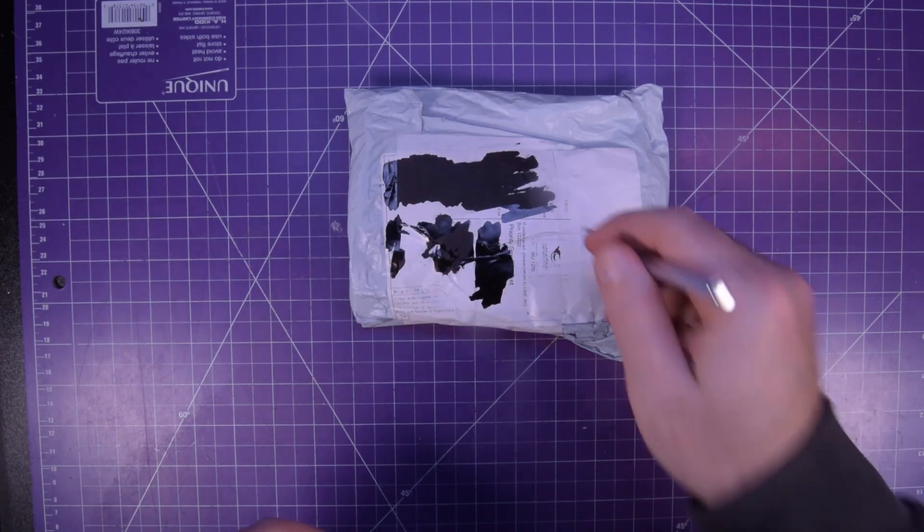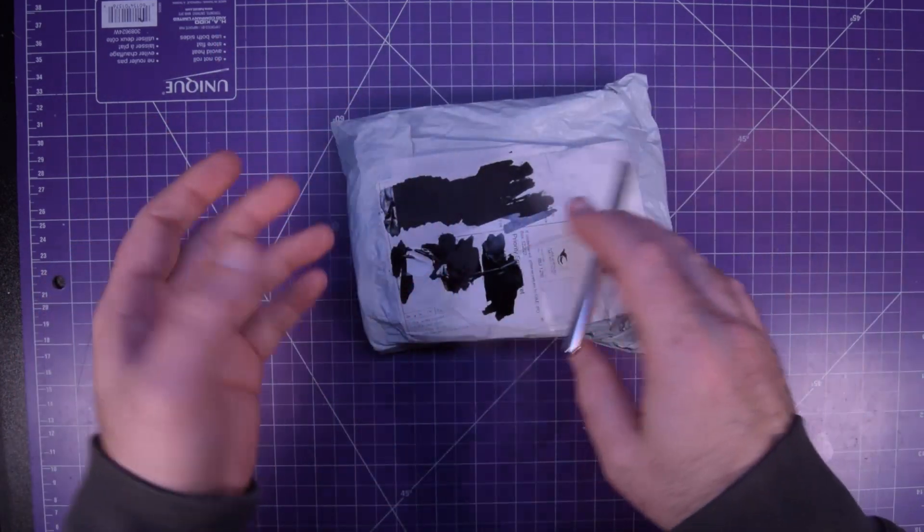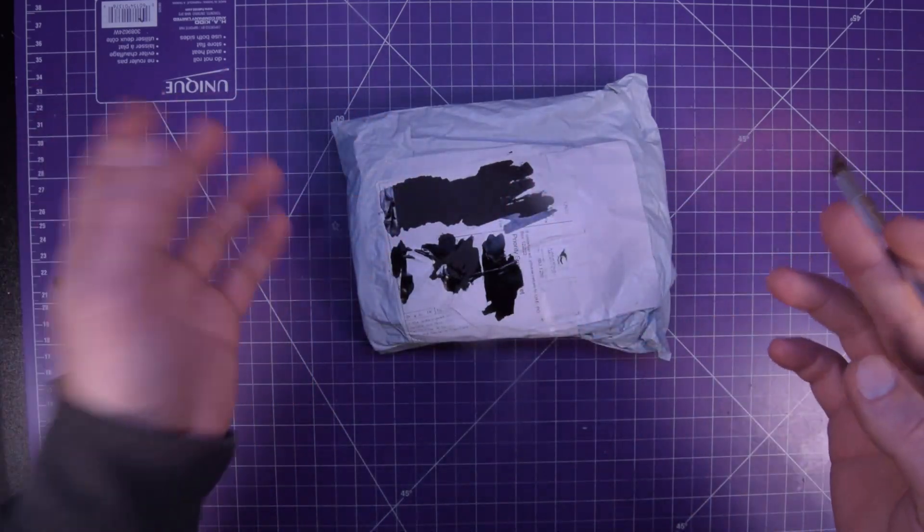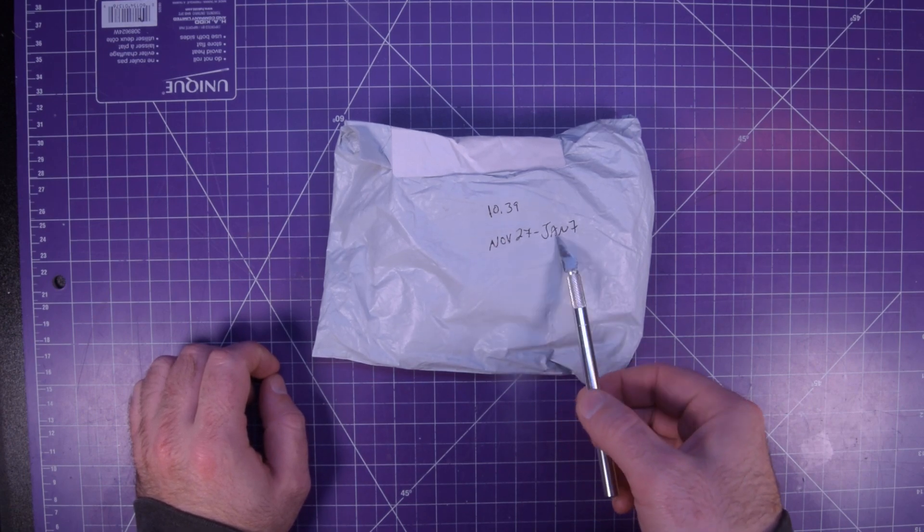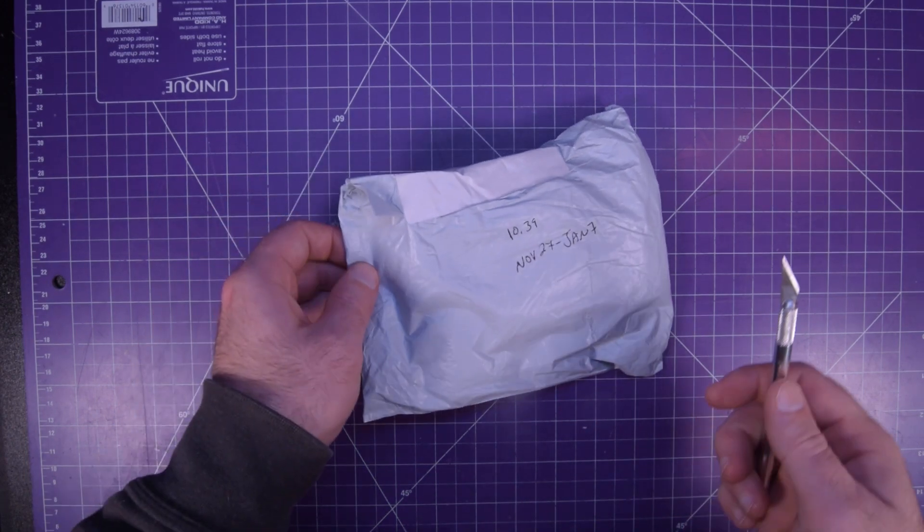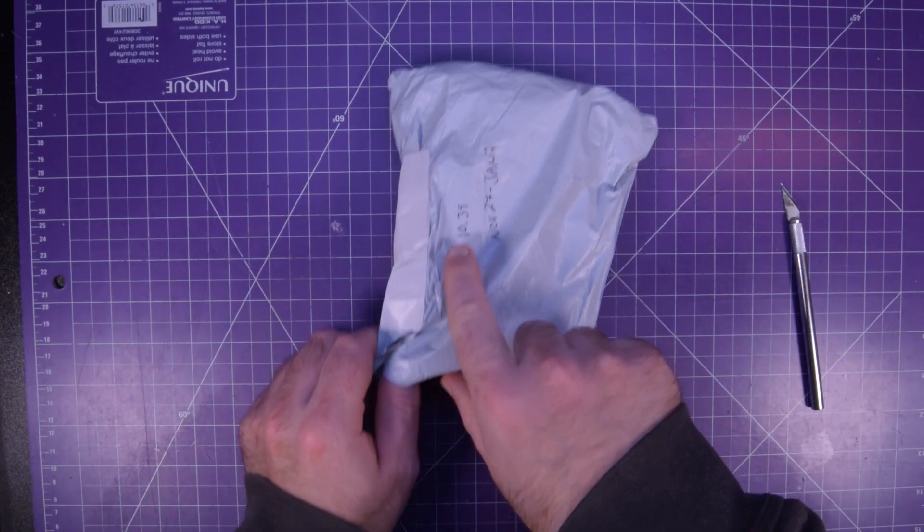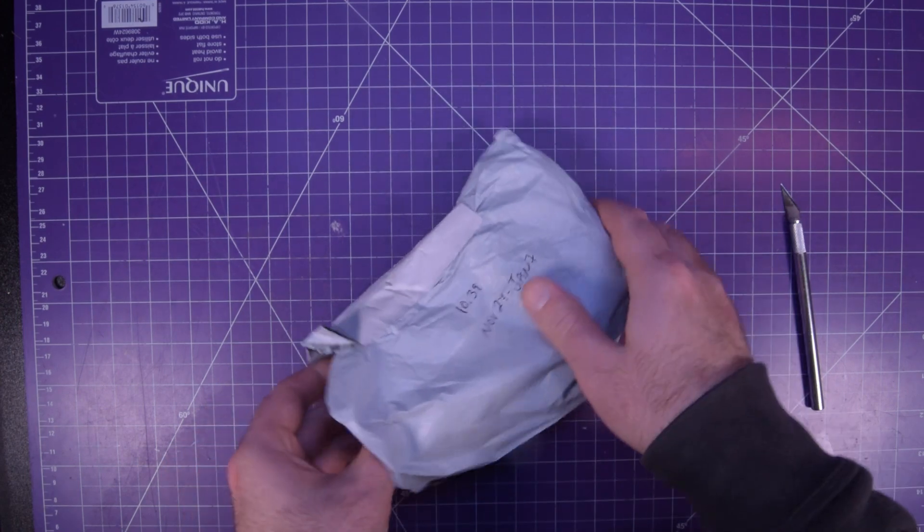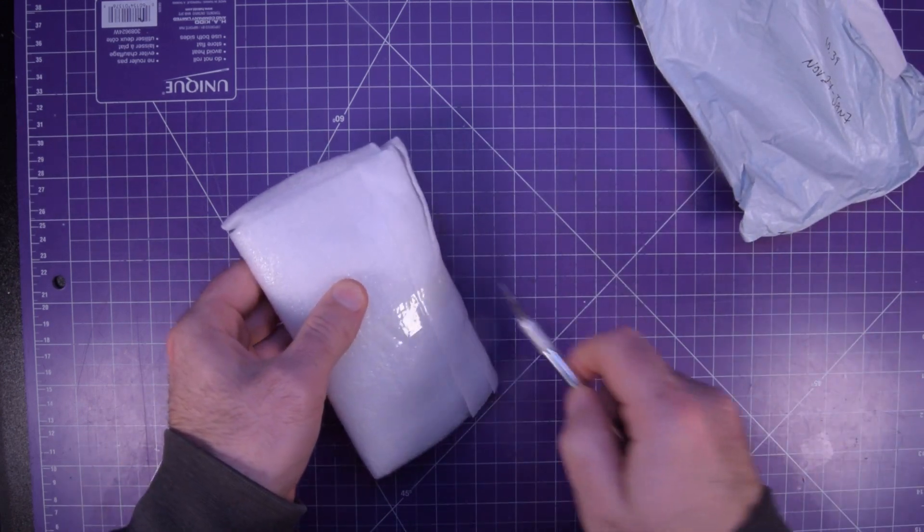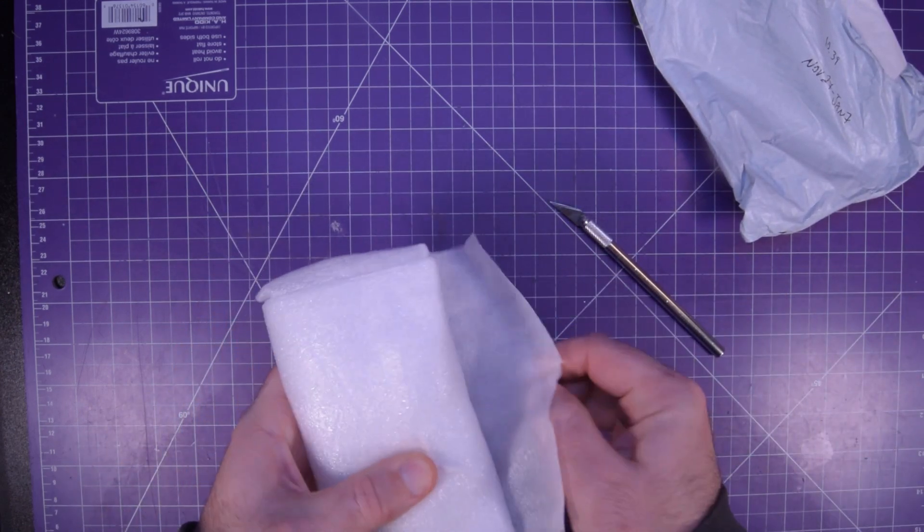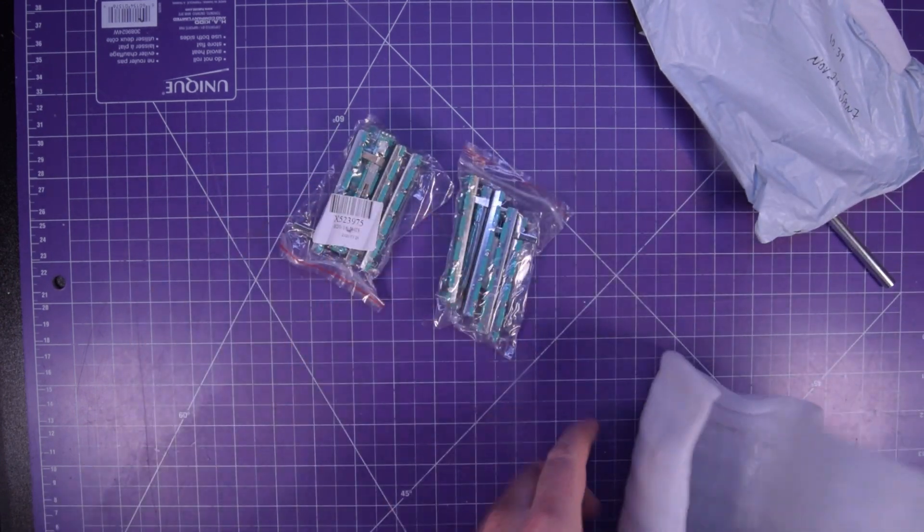First one up is this one here. I tried to get a little bit of information on it, but it's at the point now where these packages have like three or four stickers, one on top of the other. It's $10.39, November 27th ordered to January 7th arrived. I did know what it was at some point. Oh yeah, I do remember these exactly.